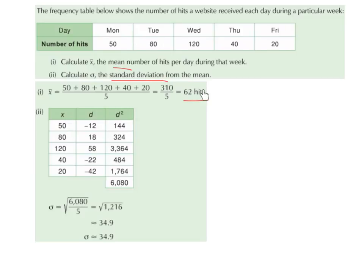So 50 minus 62 is minus 12. 80 minus 62 is 18. 120 minus 62 is 58. 40 minus 62 is minus 22. And 20 minus 62 is minus 42.